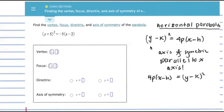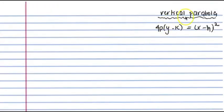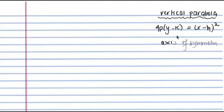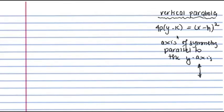Now let's look at what it looks like when we have a vertical parabola. With a vertical parabola, the y is linear and the quantity x minus h is squared, therefore x is squared. With the vertical parabola, it's going to have an axis of symmetry parallel to the y-axis, which is vertical as opposed to the x-axis, which is horizontal.